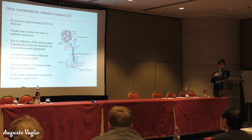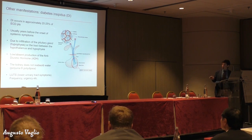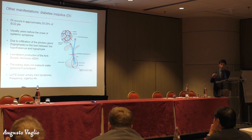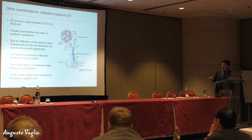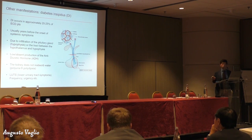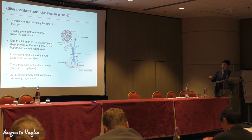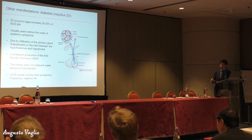Finally, there are other problems that can affect the urinary system but are not urinary diseases. One of them is diabetes insipidus — the endocrine lecture that follows will explain it better. It occurs in about 20 to 25 percent of ECD patients. Its onset is usually years before the onset of systemic symptoms. It is due to infiltration of the hypophysis or the tract between the hypophysis and the hypothalamus, causing low production of ADH — the antidiuretic hormone. So the kidneys do not reabsorb water, and the result is polyuria — a lot of urine — and polydipsia, meaning you are always thirsty. This can also cause lower urinary tract symptoms such as frequency and urgency.